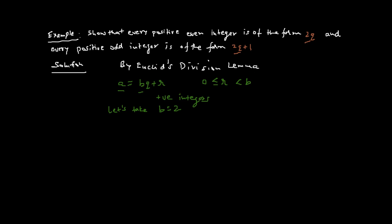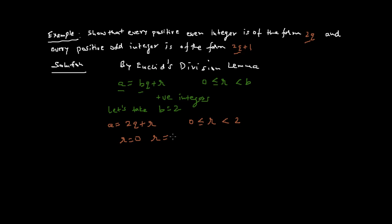So we get a equal to 2q plus r if we substitute b by 2, and here r will be greater than or equal to 0 and less than 2. So the remainder r will be either equal to 0 or equal to 1.